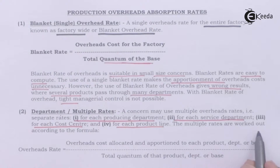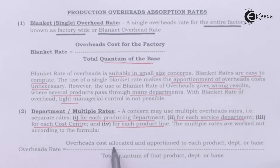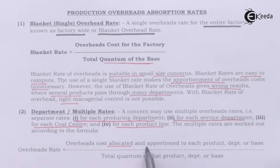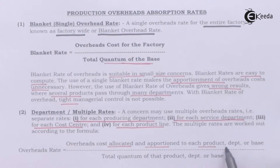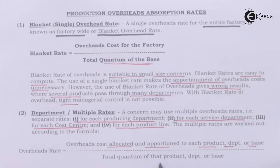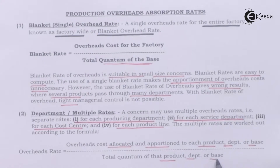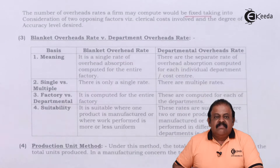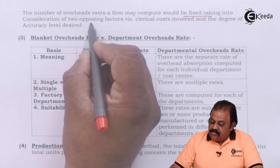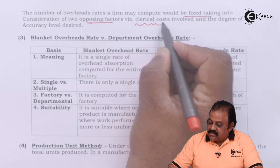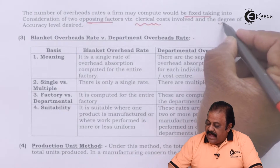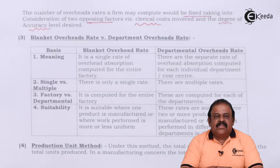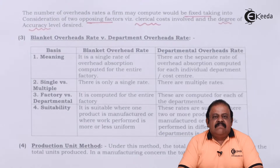Separate rates can be set for each servicing department, each cost center, or each product line. The multiple rates are worked out according to the formula: overhead rate equals overhead cost allocated and apportioned to each product, department, or base divided by total quantum of that particular product, department, or base. The number of overhead rates a firm may compute depends on two factors: clerical cost involved and degree of accuracy required.